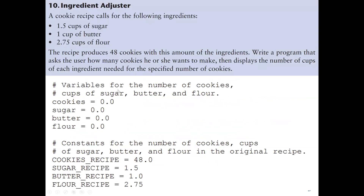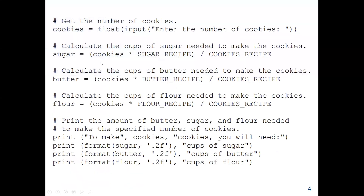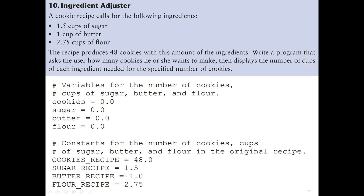The program asks the user how many cookies they want to make, then displays the number of cups for each ingredient needed for the specified number of cookies. There are three ingredients, and the given amounts of these three ingredients can produce 48 cookies. So when we need sugar, it's cookies times sugar_recipe divided by 48, because the given sugar_recipe amount produces 48 cookies, stored in cookies_recipe. Sugar is 1.5, butter is 1.0, and flour is 2.75.